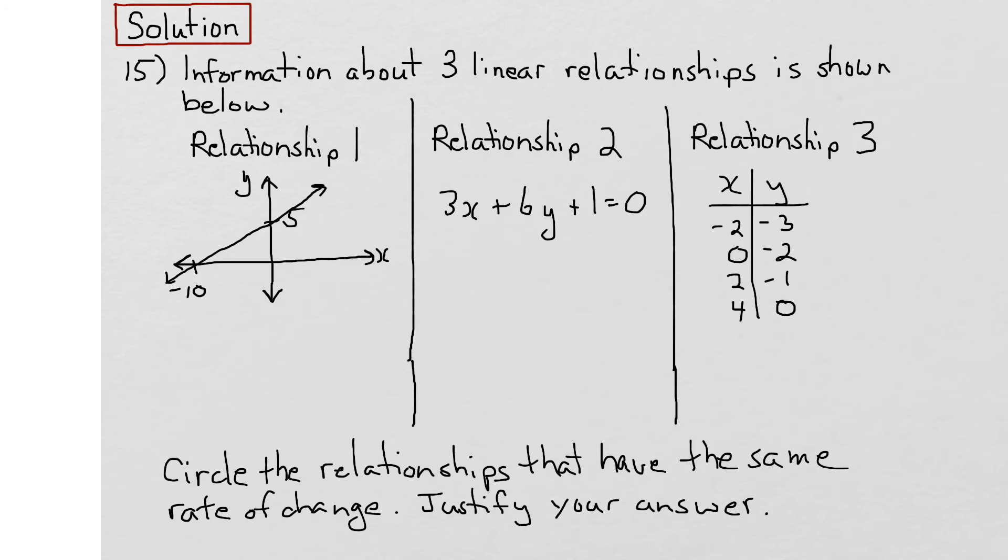Let's start with relationship 1. When we're given a graph, slope can be determined by looking at the rise over the run. The rise here, starting from this point to this point, is 5 units in the positive direction.